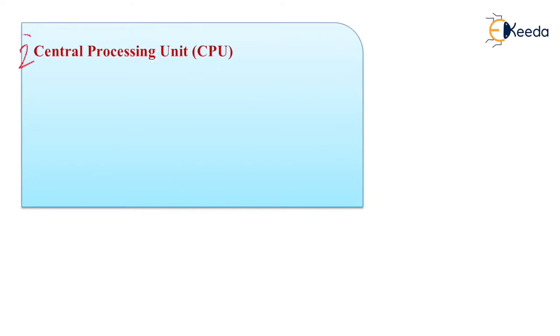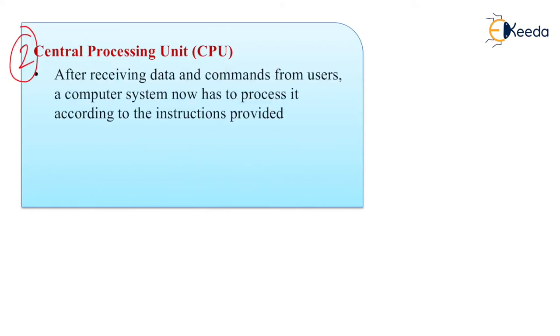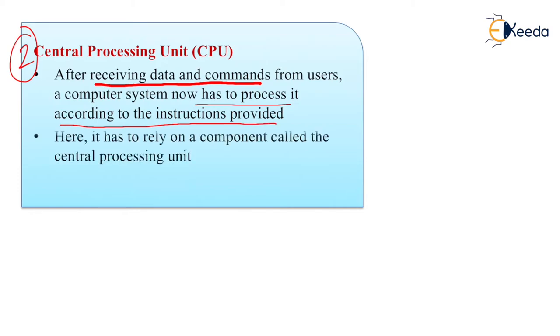Second input device is central processing unit that is CPU. After receiving data and commands from users, a computer system now has to process it according to the instruction provided. Here, it has to rely on the component which is called as central processing unit.